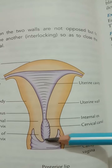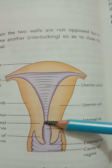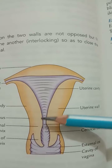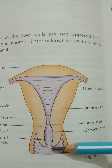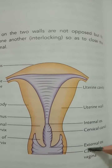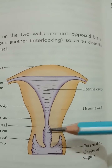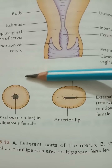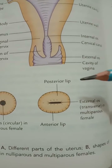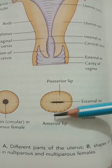The cavity of the cervix is a small spindle-shaped canal, broader in the middle and narrow at both ends. It communicates superiorly with the cavity of the body through the internal os and inferiorly with the vaginal cavity through the external os. In nulliparous women the external os is small and circular, whereas in multiparous women it is large and shows a transverse slit with both anterior and posterior lips.